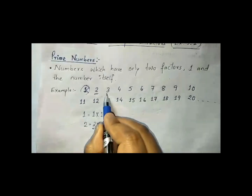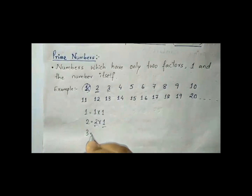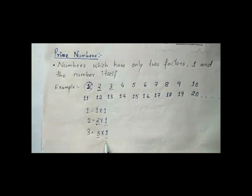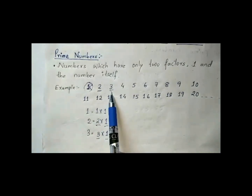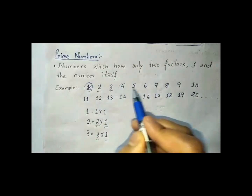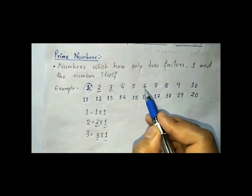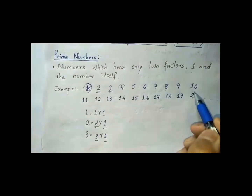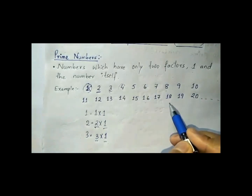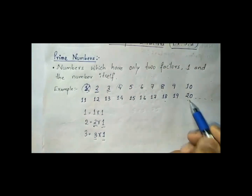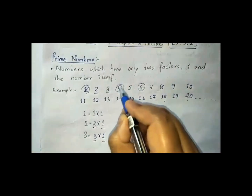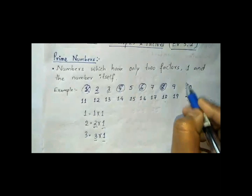Now let us see three. Three has how many factors? Three has only two factors, so three is also a prime number. Now all the even numbers — that is 4, 6, 8, 10, 12, 14, 16, 18, 20 — they are not prime numbers. So we can omit all the even numbers.